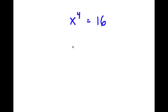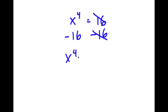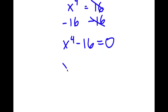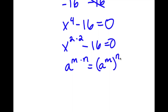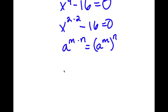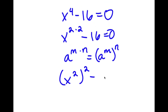In this problem, I have x to the power of 4 equal to 16. I start by subtracting 16 from both sides, leaving x to the power of 4 minus 16 equals 0. I rewrite x⁴ as x to the power of 2 times 2. Using the property a to the power of m times n equals a to the power of m to the power of n, I rewrite this as x squared to the power of 2, and 16 as 4 to the power of 2, giving x squared squared minus 4 squared equals 0.